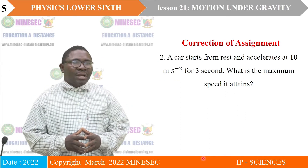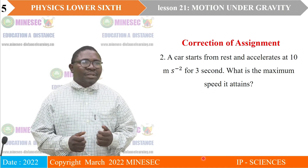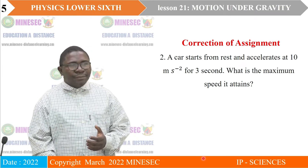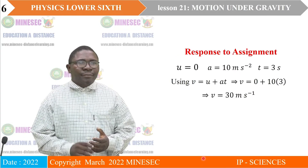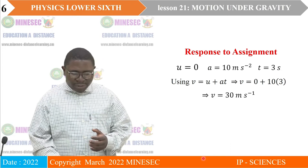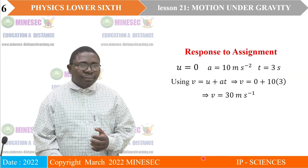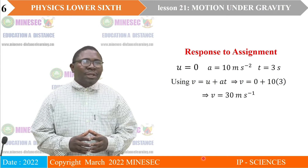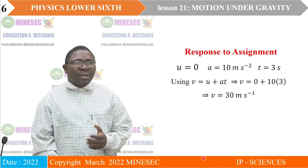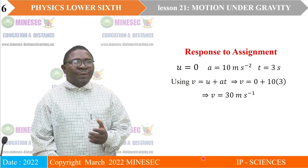Correction of the second assignment. A car starts from rest and accelerates at 10 meters per second squared for 3 seconds. What is the maximum speed it attains? Initial speed equals 0 because the object started from rest. A equals 10 meters per second squared and T equals 3. Using equation 1 and substituting, that is the answer we are expected to have.